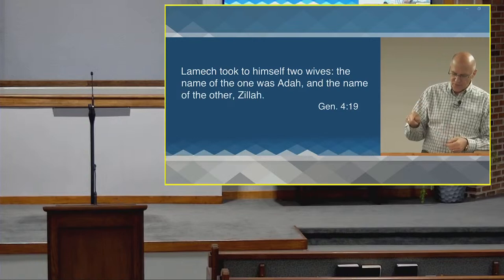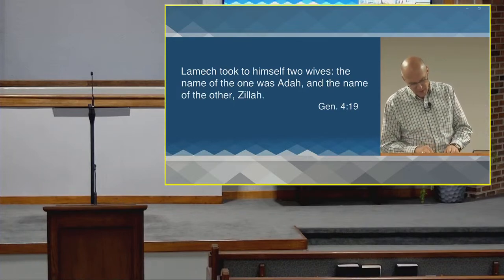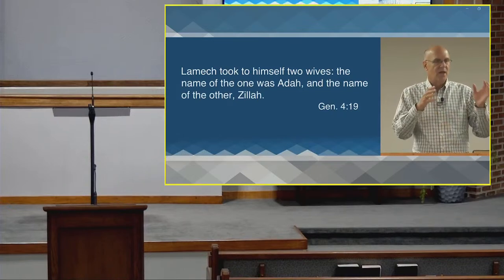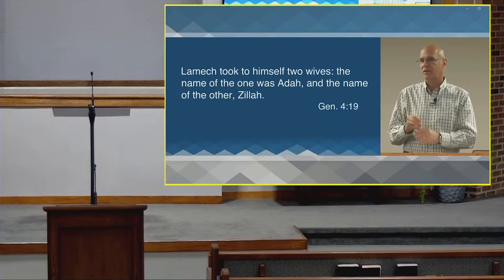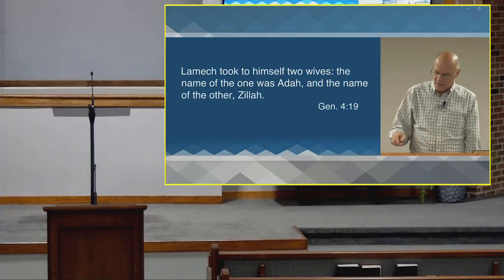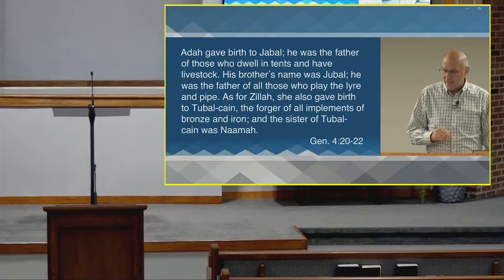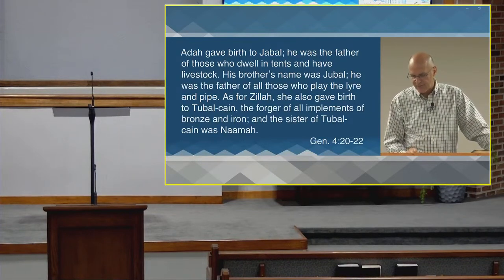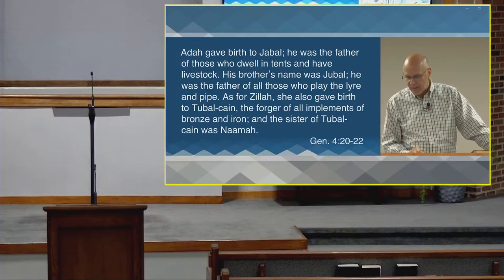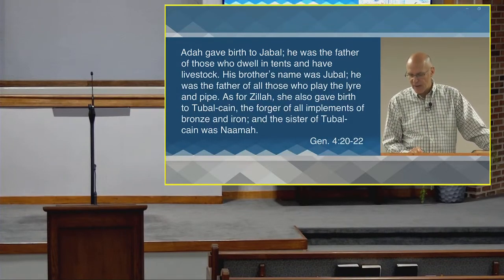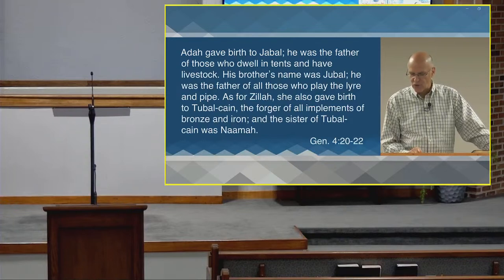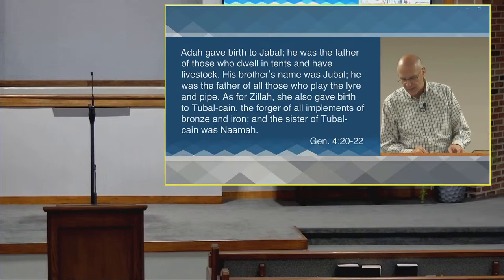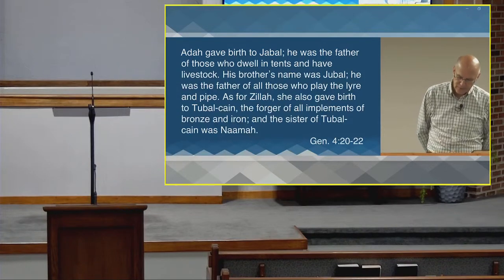The reason for this may not have been sexual lust, but rather the desire to have a larger family faster, guaranteeing safety, prosperity in numbers, and strength in the community. Verses 20 to 22: 'Adah gave birth to Jabal, and he was the father of those who dwell in tents and have livestock. His brother's name was Jubal — he was the father of all those who play the lyre and pipe. As for Zillah, she also gave birth to Tubalcain, the forger of all implements of bronze and iron. And the sister of Tubalcain was Naamah.'